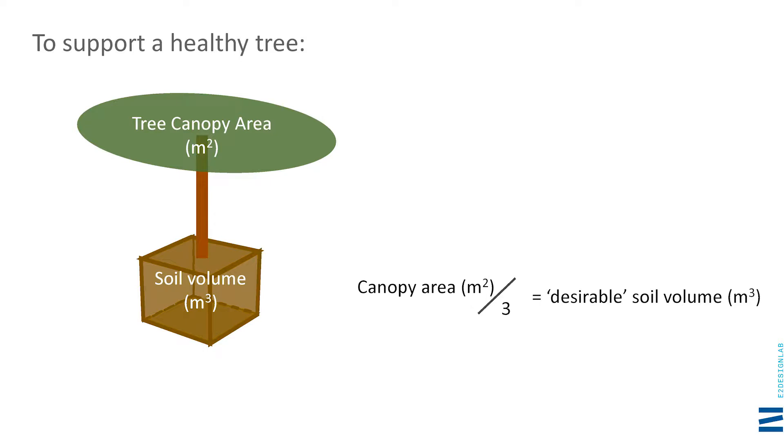The next several slides are about the relationship between catchment and tree size. Here's a rule of thumb starting point based on the assumption that in-situ soil conditions won't be good in a city environment. Different studies say different things on soil volume, but if you take the area beneath the canopy and assume about 350mm of good dirt below it, the relationship is: take the square meterage of the tree canopy area, divide by three, and you get your desirable soil volume.